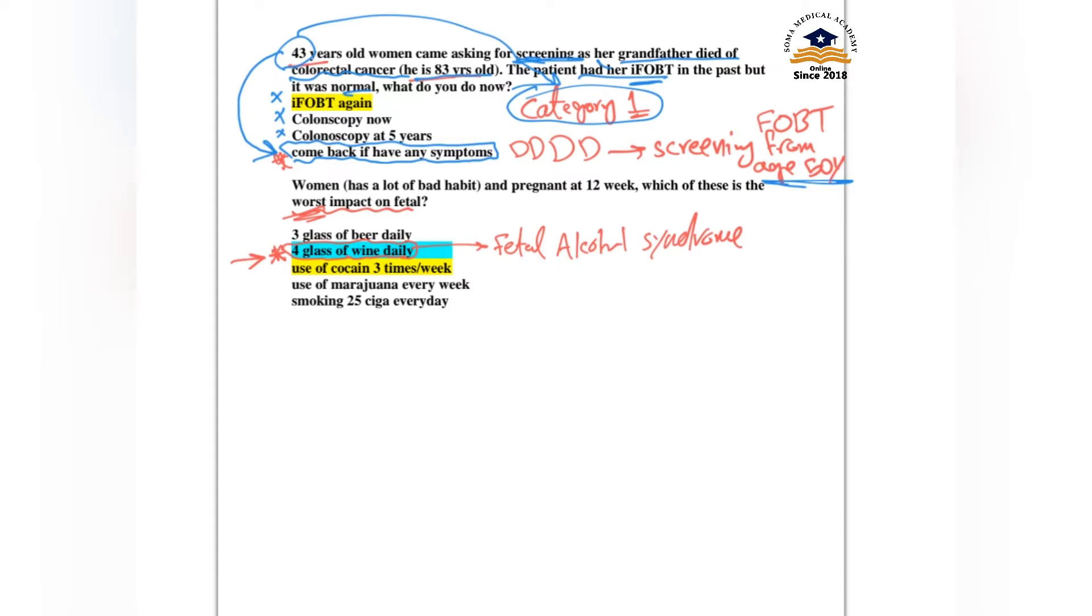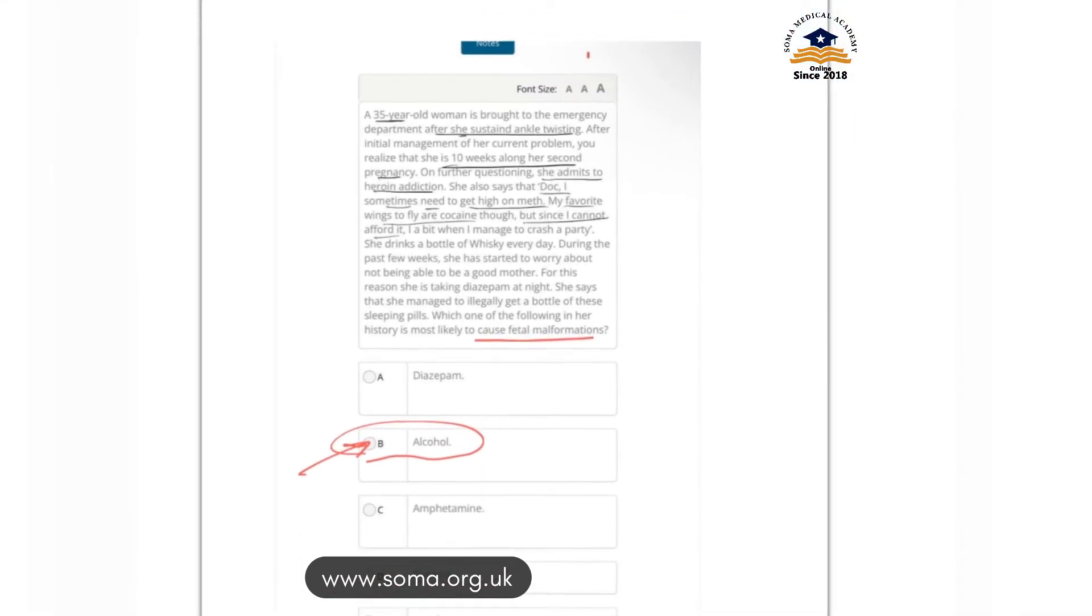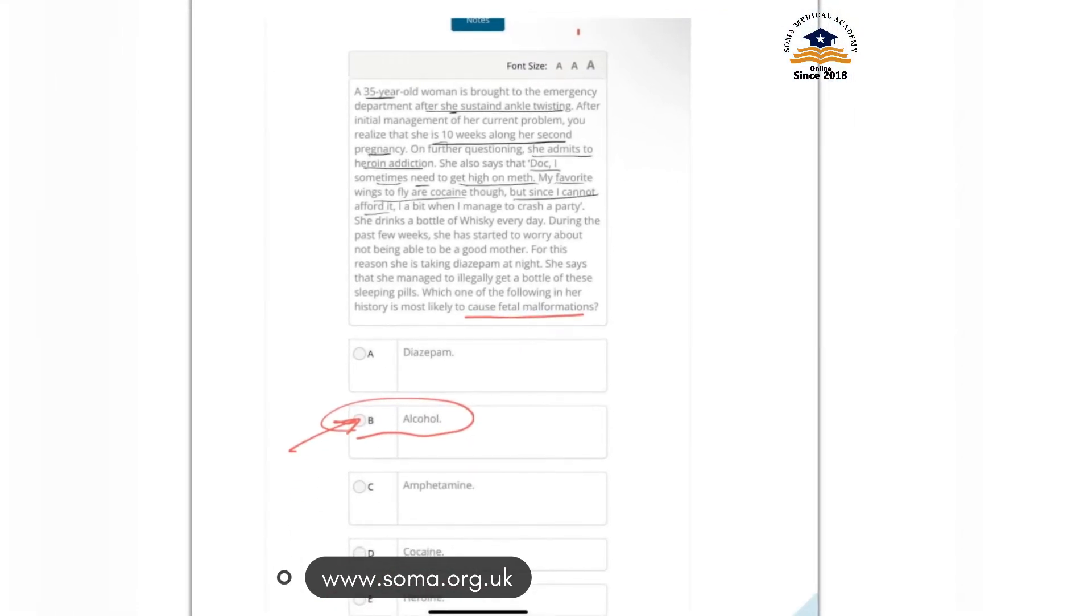A woman who is pregnant at 12 weeks, which of these has the worst impact on the fetus? All of them have worse effects on the fetus, but the worst one is four glasses of wine daily. This will lead absolutely to fetal alcohol syndrome. Of course, cigarette smoking is bad, marijuana is bad, cocaine is bad, beer is bad, but four glasses of wine is a lot and will lead to fetal alcohol syndrome.